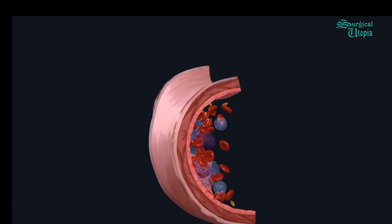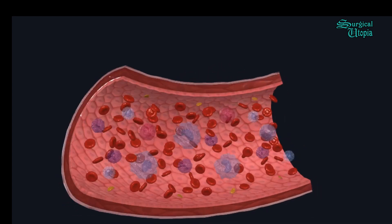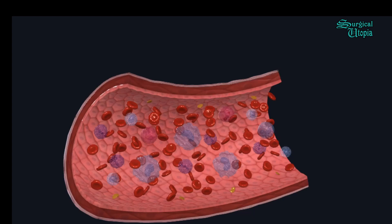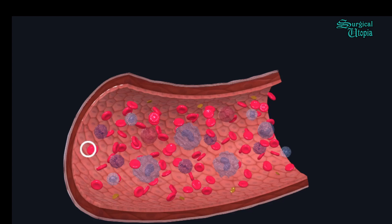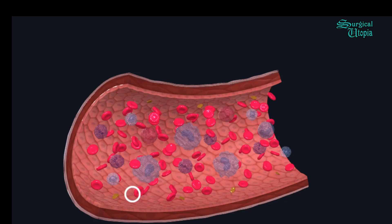These are the blood cells. The largest number present are the red blood cells, or erythrocytes. These erythrocytes are small, biconcave, and discoid in structure. The thickness at the center of the cell is around 0.8 micrometers, whereas at the outer edge the thickness is around 2.6 micrometers.